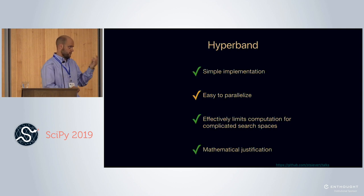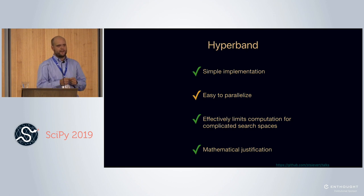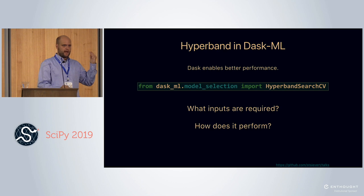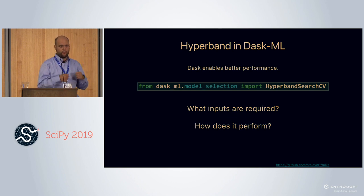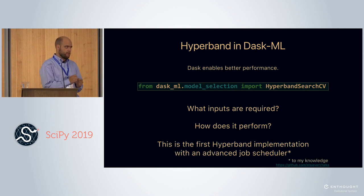That's Hyperband. It has a simple implementation and mathematical justification to limit computation. It's also easy to parallelize — though the number of models decreases within any bracket as time goes on, the brackets are run completely in parallel. I've implemented Hyperband in DaskML. To my knowledge, this is the first implementation of Hyperband in an advanced task scheduler like Dask.